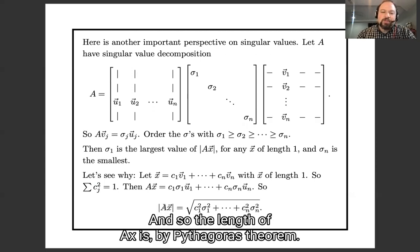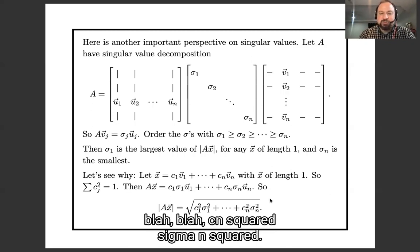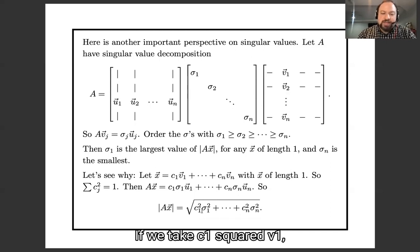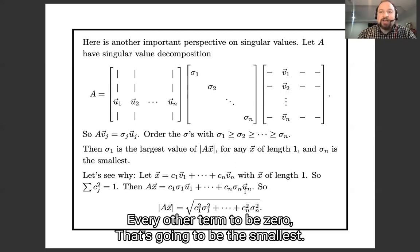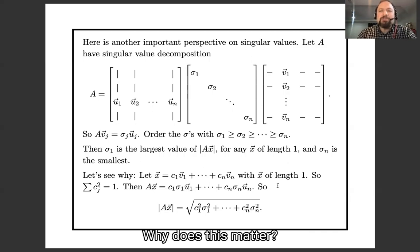This is very similar to the computation with eigenvectors, except we have to keep track of the difference between v and u. And so the length of Ax is, by the Pythagorean theorem, square root c1²σ1² plus blah blah blah cn²σn². That's going to be at its largest if we take c1 squared to be 1 and the other terms to be 0. That's going to be at its smallest if we take cn squared to be 1 and the other terms to be 0.